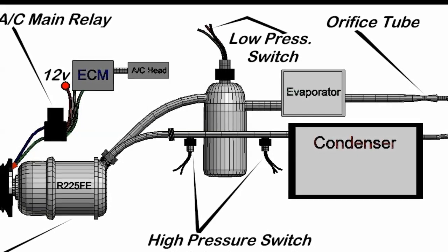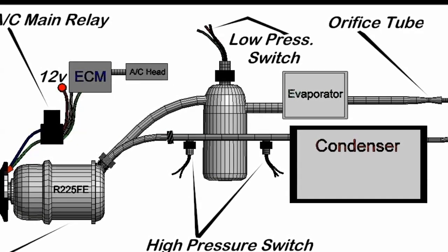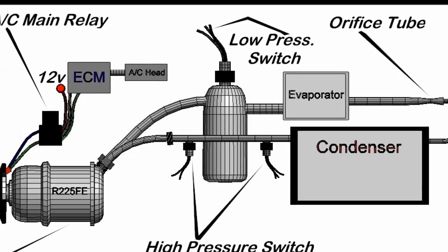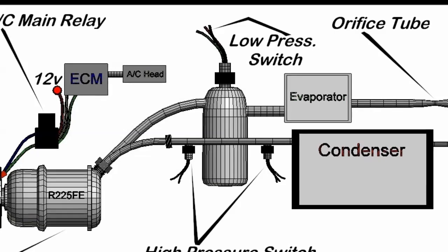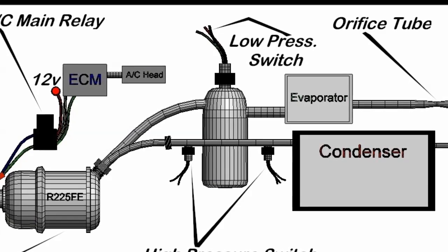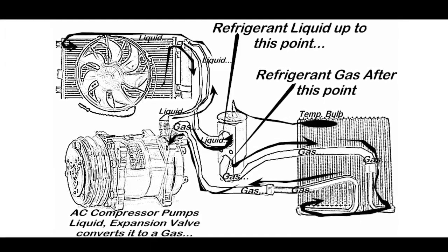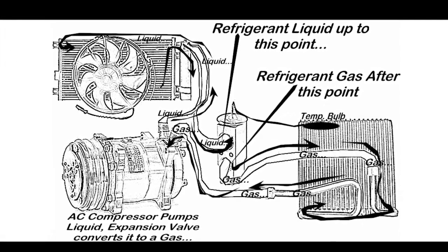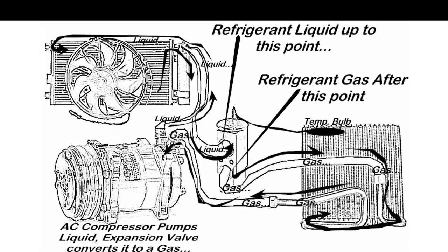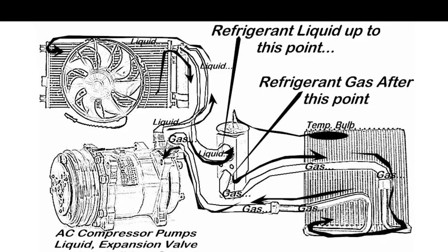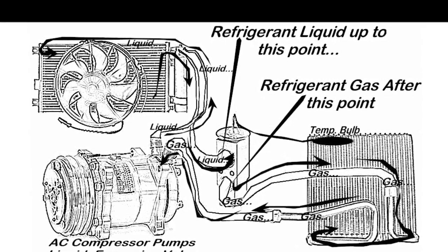Again, we're showing you the whole layout of the whole system. The important thing is to understand what's connected to what and what actuates what, which is important when you're tracing a problem. For example, say the AC compressor is not being actuated. What is it? Is it the wire? Is it the ECM? Or is it the AC head not commanding the compressor on?